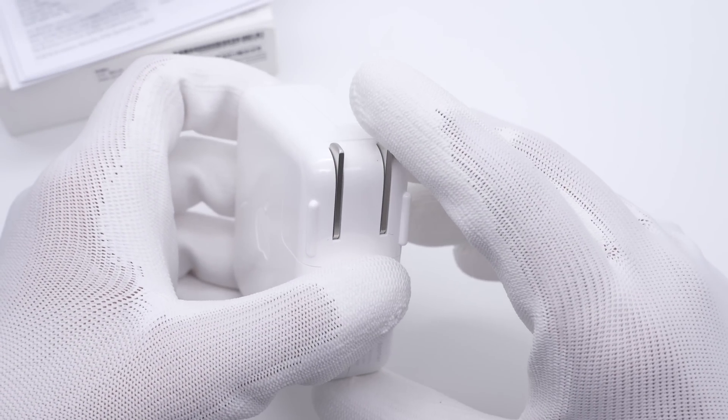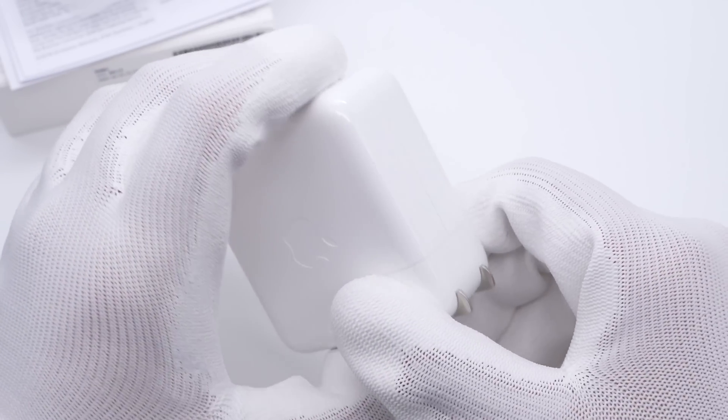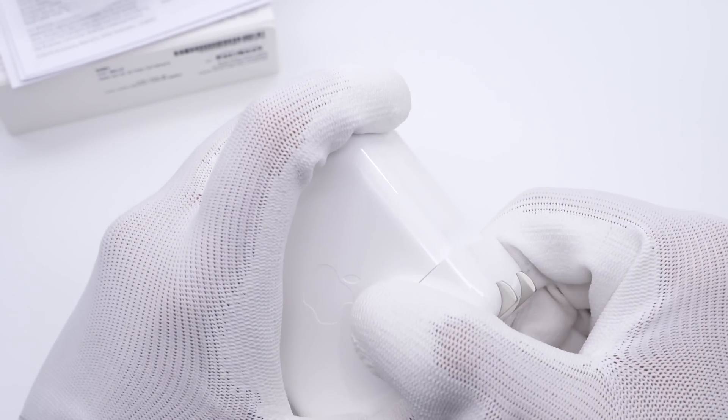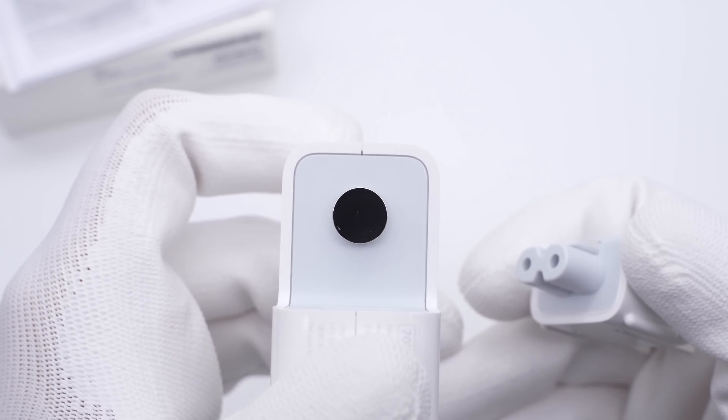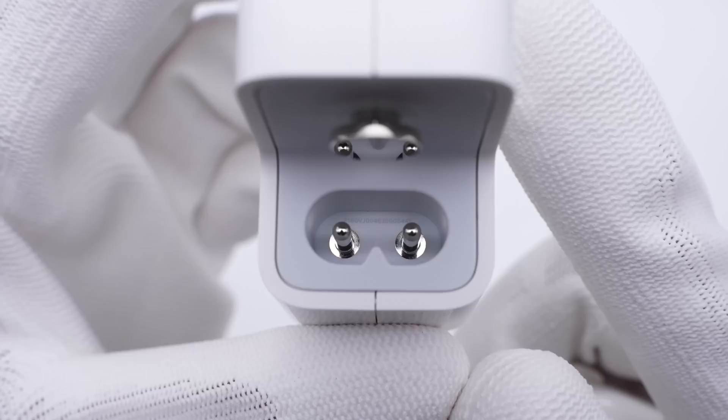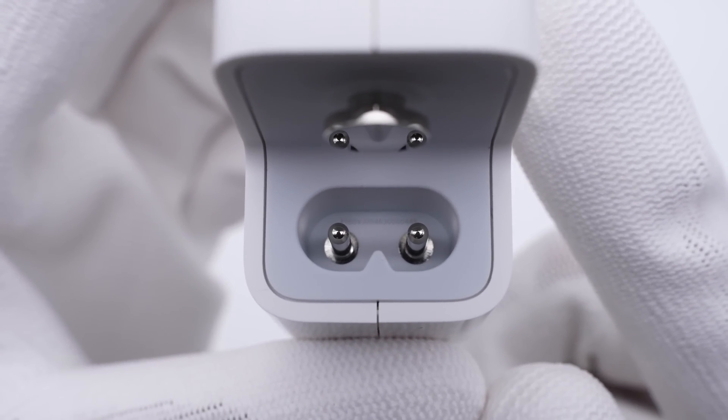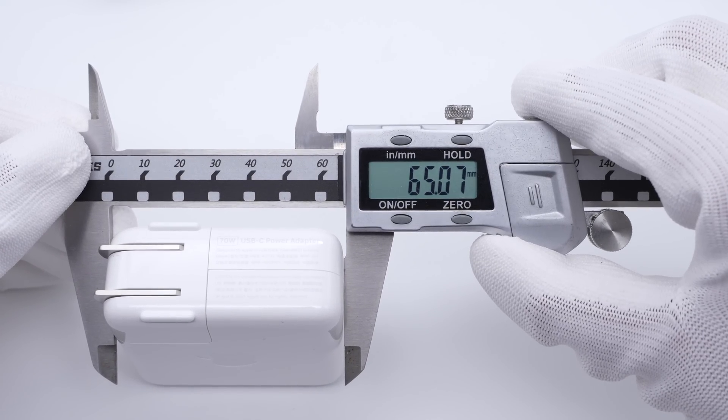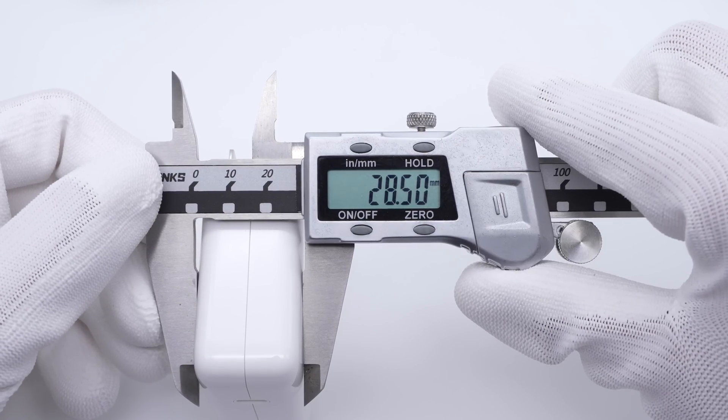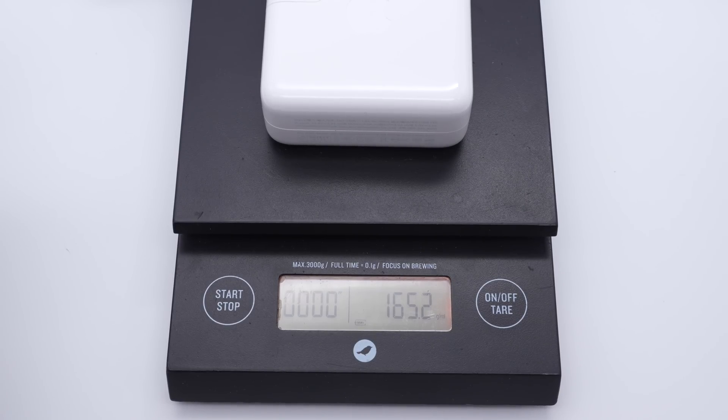Like most Apple chargers, it also has a foldable input plug. You can replace different plugs from different countries for traveling around. This round metal block is used for grounding and fixing. Here are the positive and negative pins. The size of this charger is about 65x65x28.5mm, and the weight is about 165g.